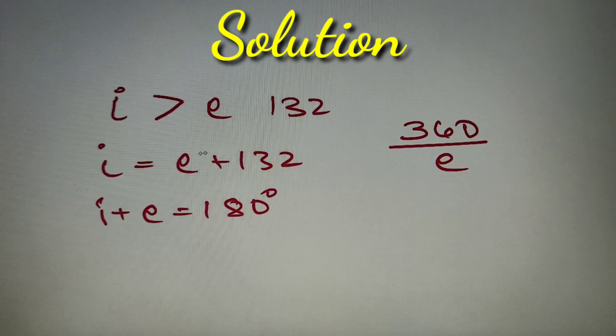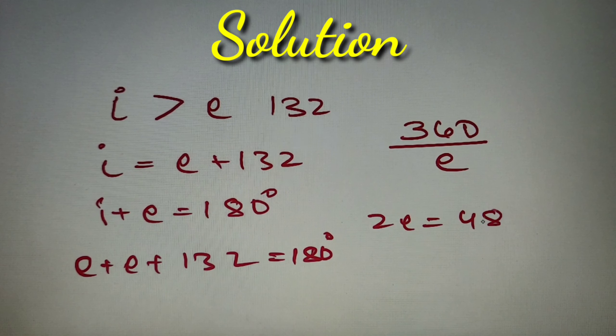Now if we simply replace the first equation in the second equation, we'll get that e + e + 132 = 180 degrees, or the value of 2e is equal to 48, or the value of e is equal to 24 degrees.